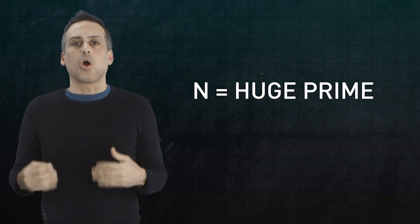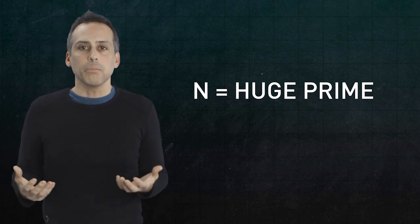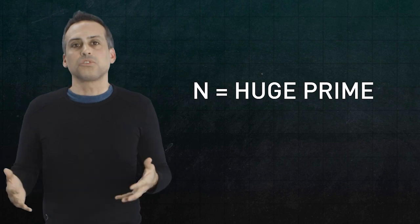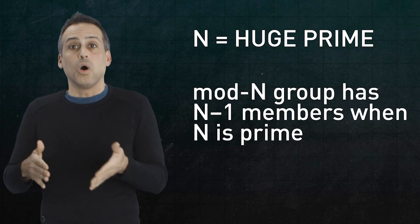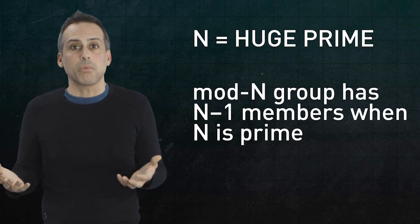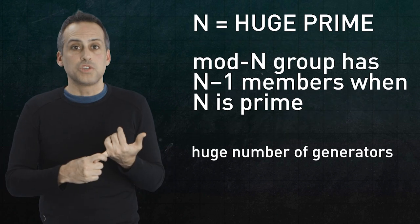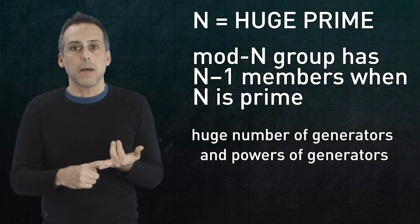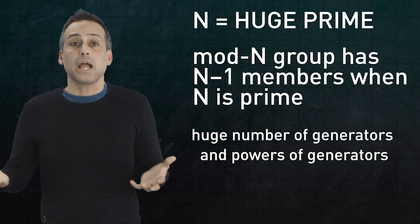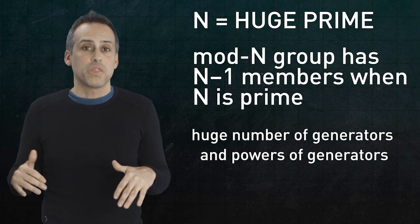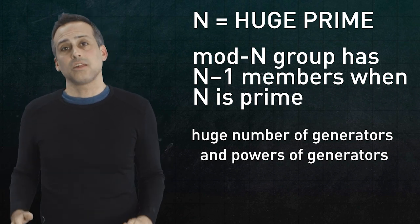That's not because prime numbers are inherently necessary for Diffie-Hellman, but rather, because from a practical standpoint, a group with a prime modulus n will automatically have n minus 1 members, which is also a huge number. That means a crazy number of generators and powers of generators to tabulate. Once n has several hundred decimal digits, then cracking the DLP becomes computationally infeasible within a human lifetime, even for the NSA.